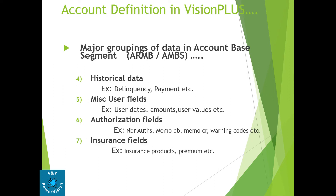Other data includes historical data — for example, delinquency and payment — miscellaneous user fields, user debts, amount, user value, authorization fields, number of authorizations, memo debit, memo credit, warning code, insurance field, insurance product, and premium. All those details are contained in the ARMB screen.